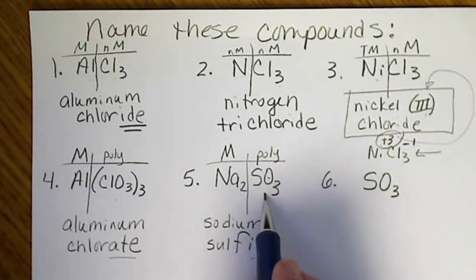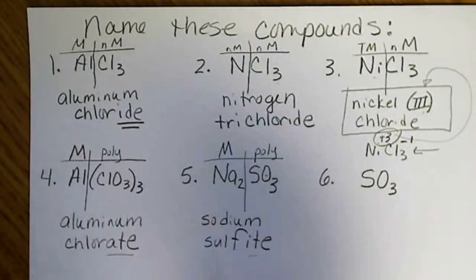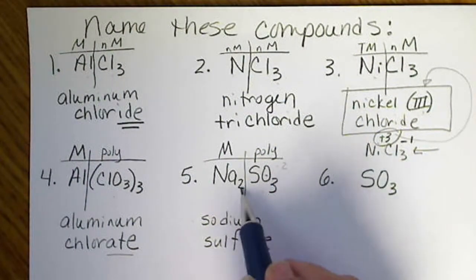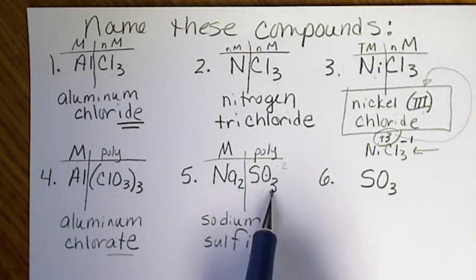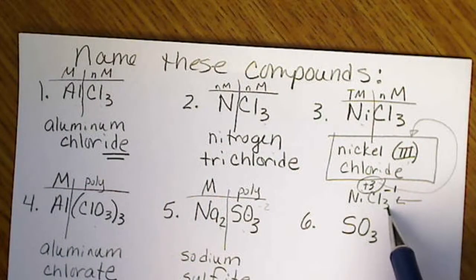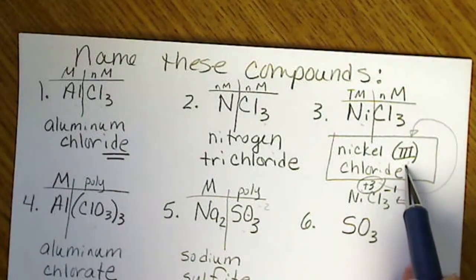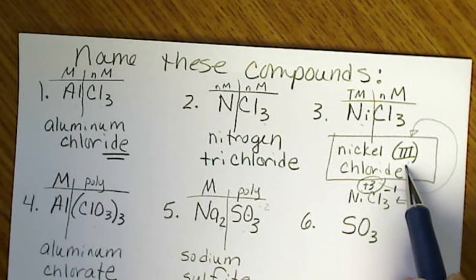That's a polyatomic ion. With a negative two charge, that's why this has two sodiums. But when we are naming, we don't care about the formula unless we need to use the formula to figure out a charge on a metal.